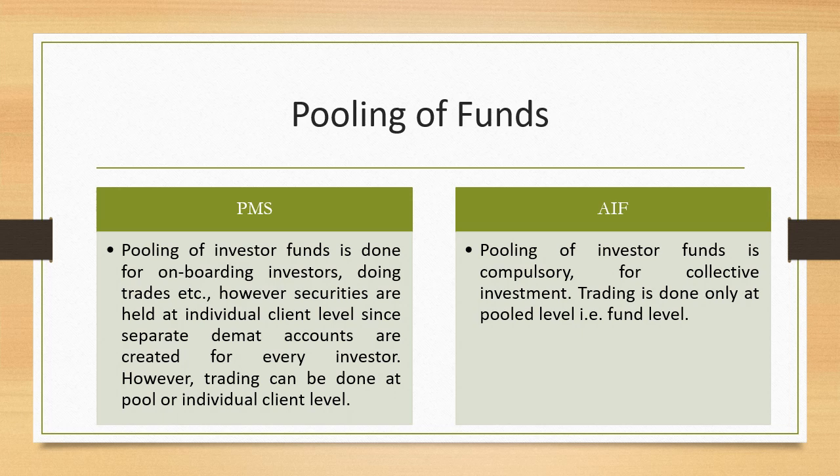In case of AIF, the pooling of investor funds is compulsory for collective investment — there is no option but to compulsorily pool the funds. Trading is done only at the pool level, that is at the fund level. There is no separate facility of trading being done for individuals; it has to be done at the pool level only. That is the first difference between PMS and AIF when it comes to how funds are pooled.